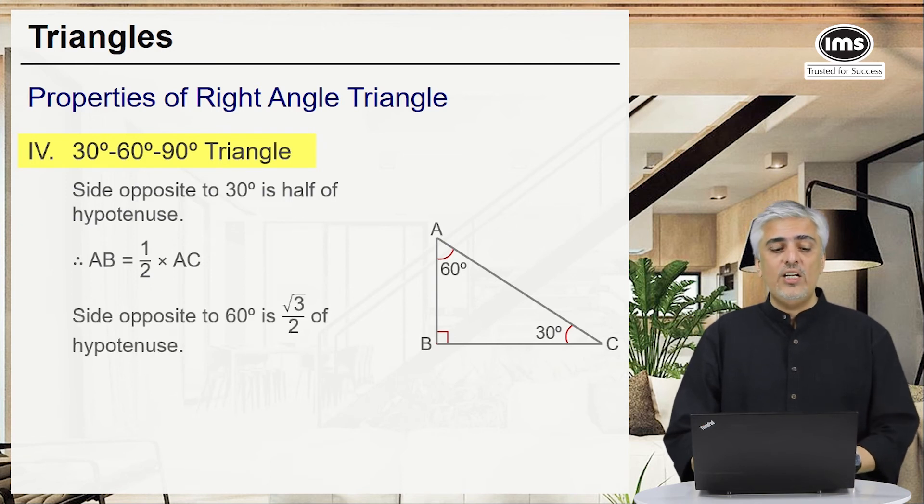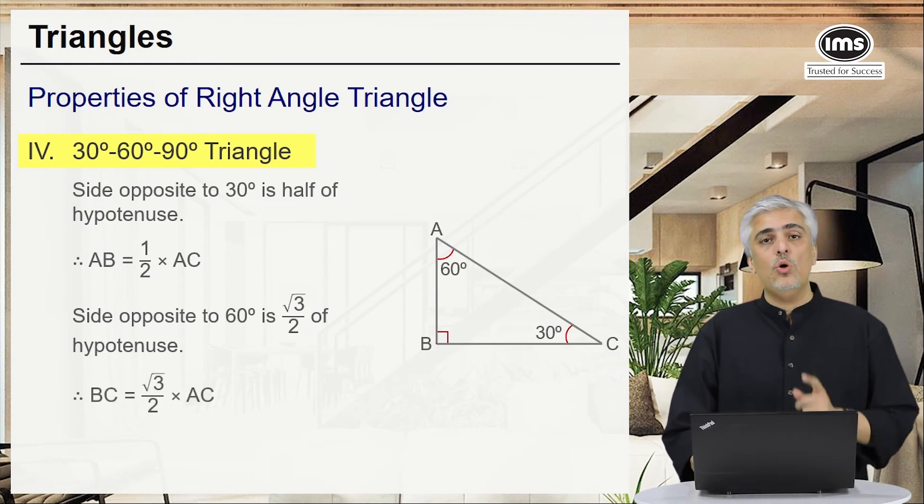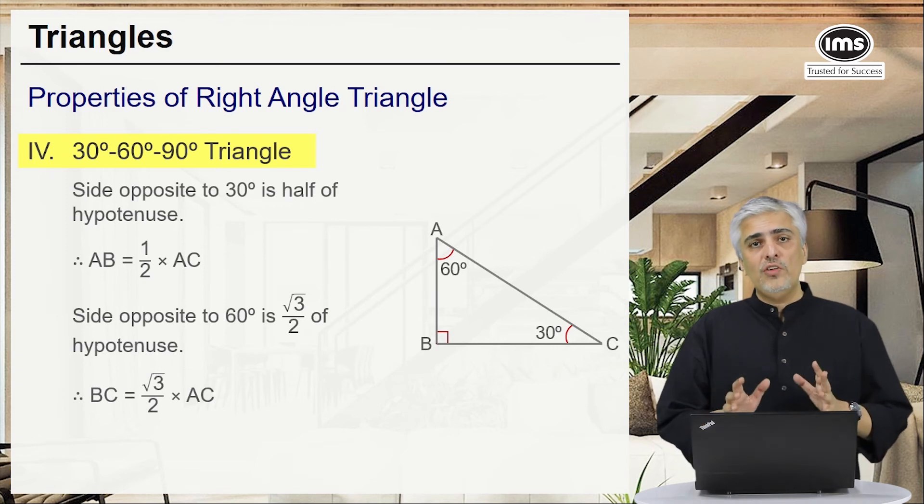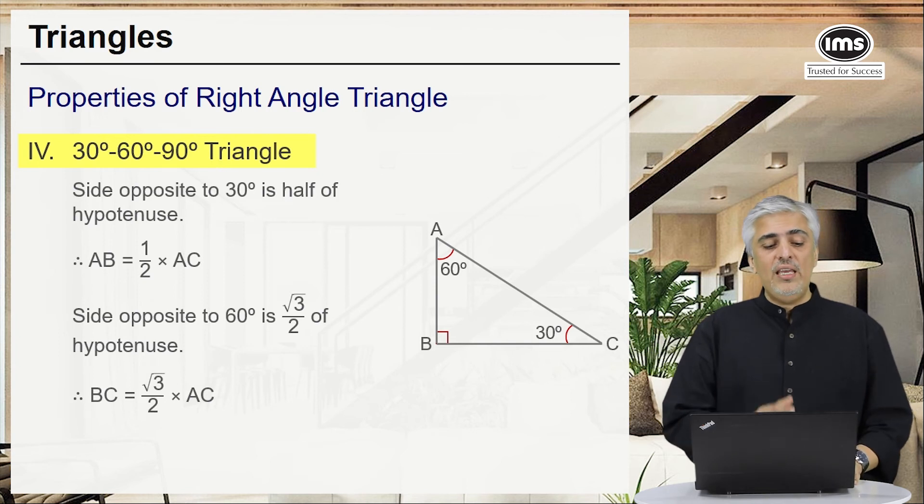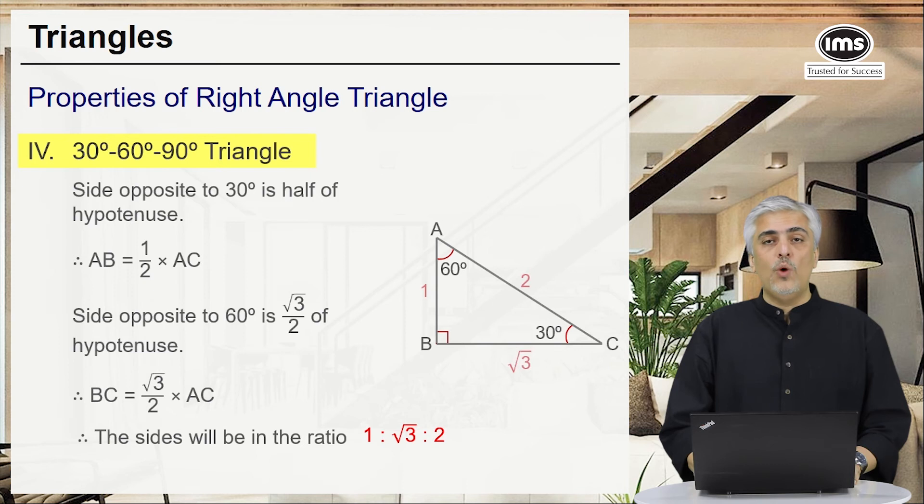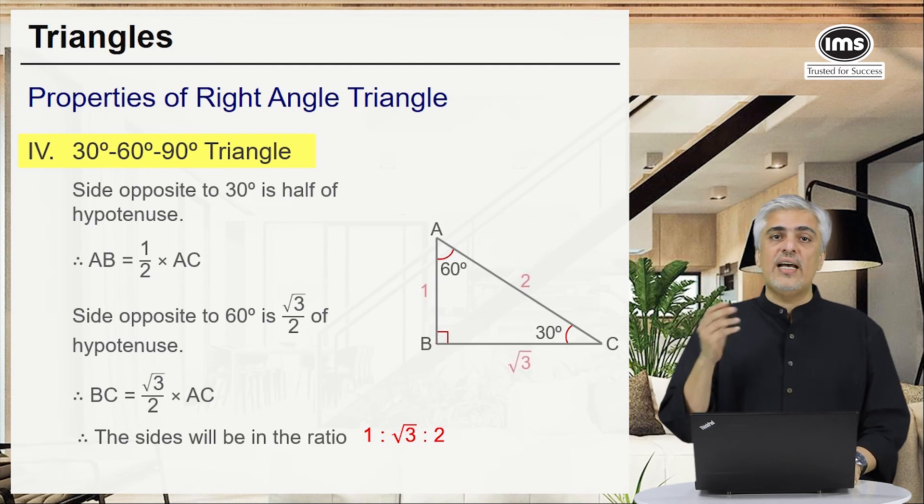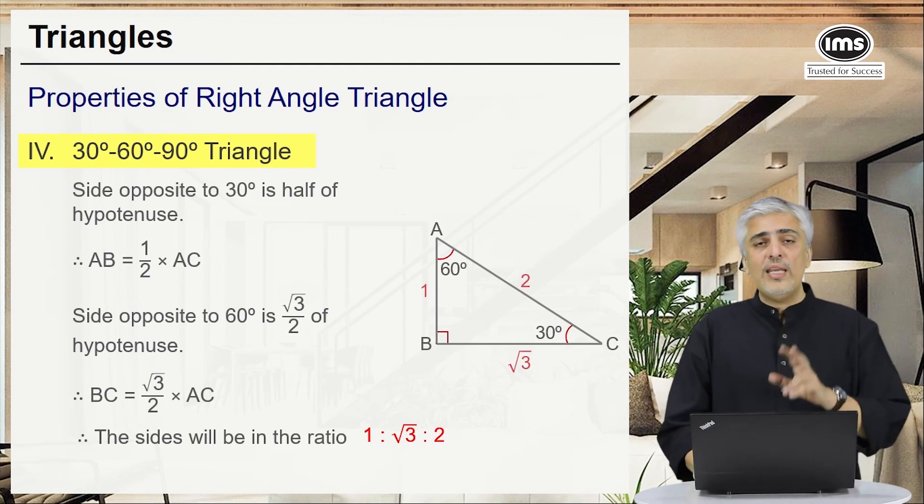Similarly, the side opposite to 60 degrees is root 3 upon 2 of the hypotenuse. That is BC will be root 3 upon 2 of AC. So if you think logically, just to take a small example, if AC was 10 then AB would have been 5 and BC would have been 5 root 3. Or in simple terms the three sides will always be in the ratio of 1, root 3, and 2. That is side opposite to 30 will be 1, side opposite to 60 will be root 3, and the hypotenuse will be 2. So very important theorem.